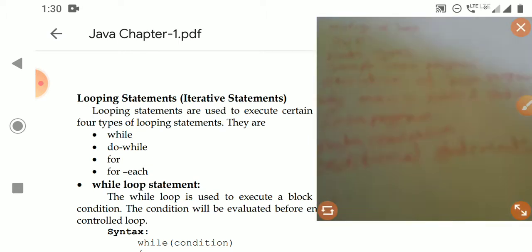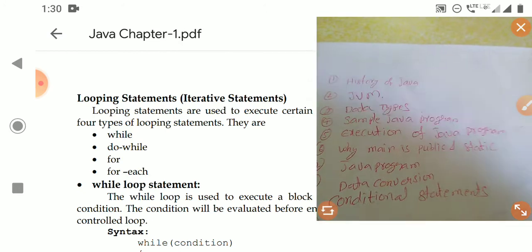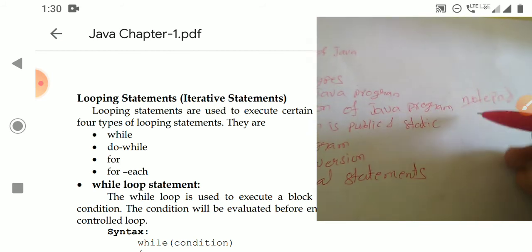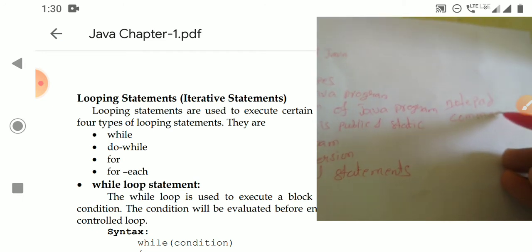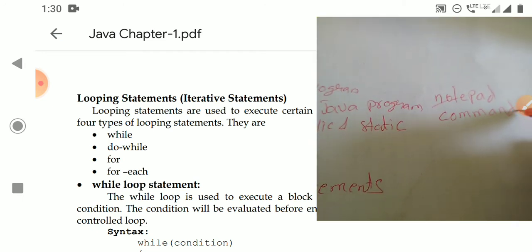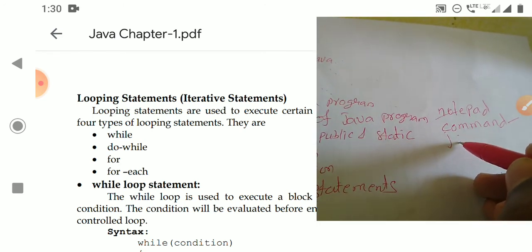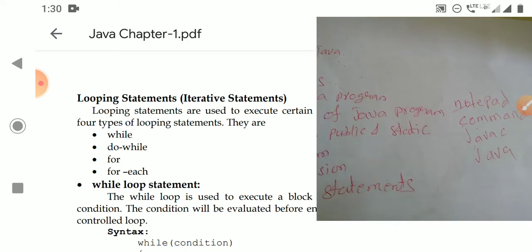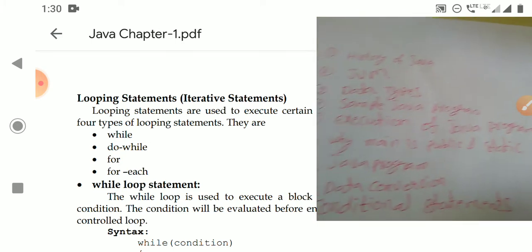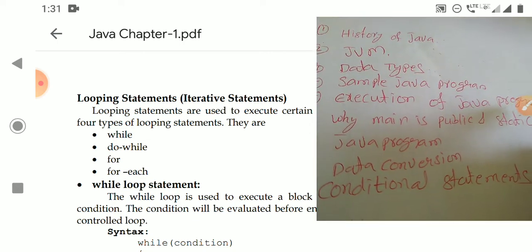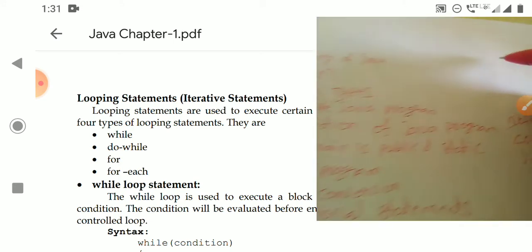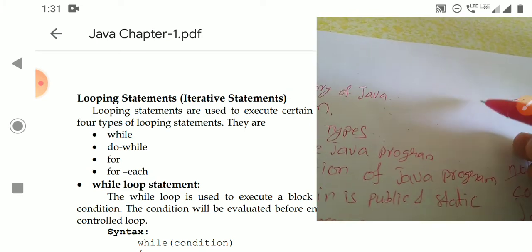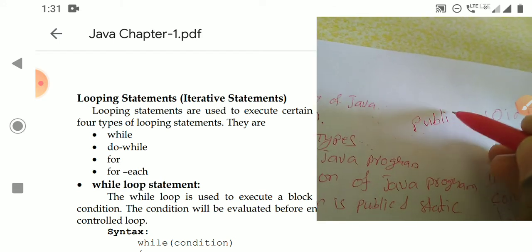We studied how a Java program is created using a text editor such as Notepad, and compiled from the command prompt. To compile a Java program, we use the 'javac' command, and to run it we use 'java'. We also discussed why the main method is declared as public and static, unlike in C and C++ where it is declared simply as void main.